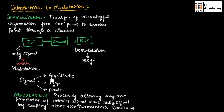For example, if we alter the amplitude of the carrier signal, then frequency and phase will be kept constant and amplitude will be varied according to the instantaneous value of the message signal — this is known as amplitude modulation. If the frequency of the carrier signal is altered by keeping amplitude and phase constant, it is known as frequency modulation. And if the phase is varied by keeping amplitude and frequency constant, it is known as phase modulation.